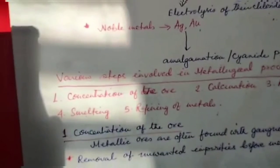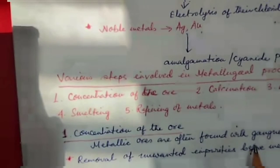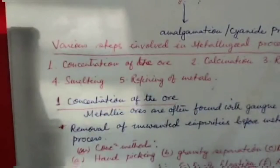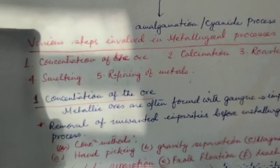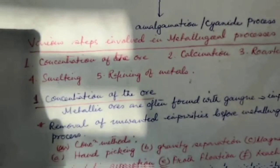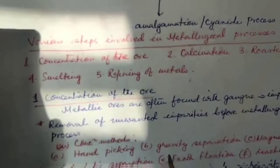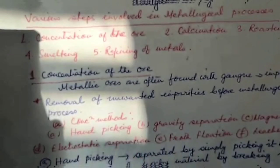Number one: concentration of the ore. Metallic ores are often found mixed with gangue, that is rocky material, for example quartz, feldspar, mica, and other silicates. Before the ore is subjected to metallurgical process, it is necessary to remove these unwanted impurities mechanically. This operation is known as concentration of the ore. The common methods are: hand picking, gravity separation, magnetic separation, electrostatic separation, froth flotation process, and leaching.